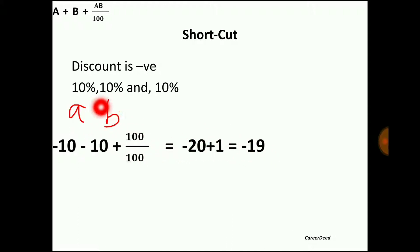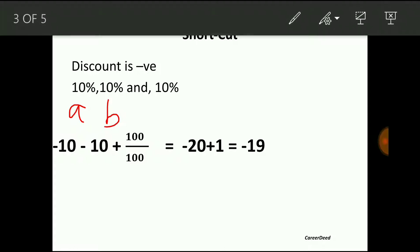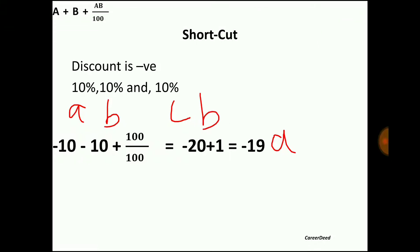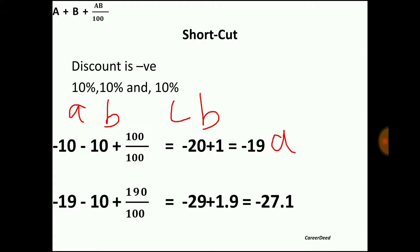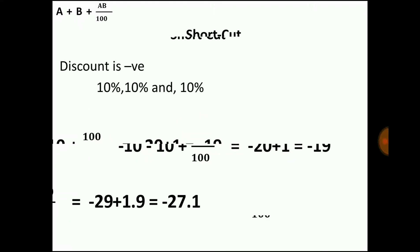Now consider this −19 as A and the remaining 10% as B, then apply the formula again: (−19) + (−10) + (−19 × −10)/100 = −19 − 10 + 190/100. When you solve this you get −27.1%. So the total successive discount given is 27.1%, which confirms our earlier calculation.